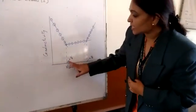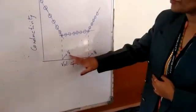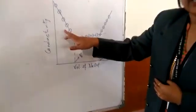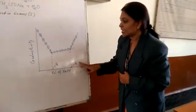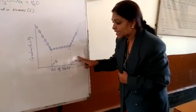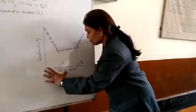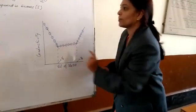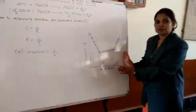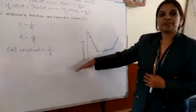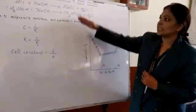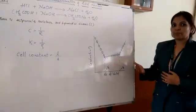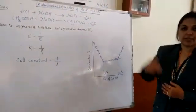From the graph you obtain two points, Va and Vb. Va is the volume of NaOH required for complete neutralization of HCl, whereas Vb is the volume of NaOH required for complete neutralization of the acid mixture. Vb minus Va gives the volume of NaOH required for neutralization of acetic acid. Using N₁V₁ = N₂V₂, you can calculate the strength of HCl and acetic acid, and then convert to grams per liter.